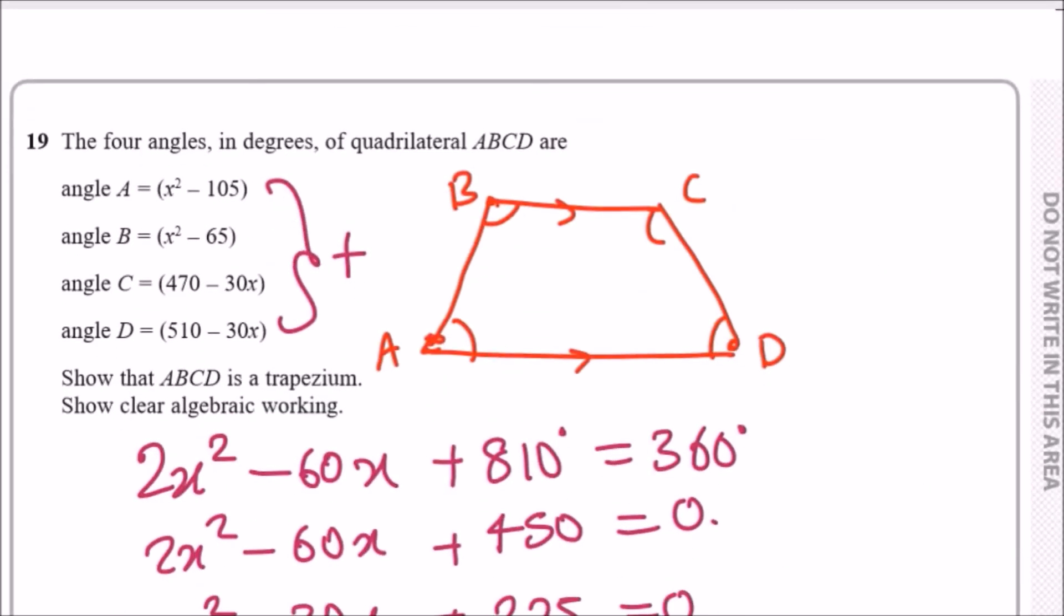Since we know the value for x, we can go ahead and work out each of these angles. When x is 15, the first angle would be 15 squared minus 105, which is 120 degrees.